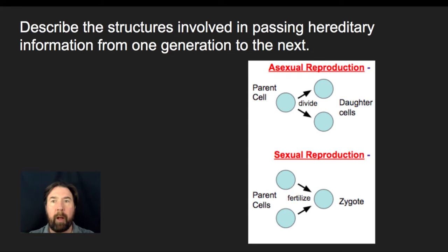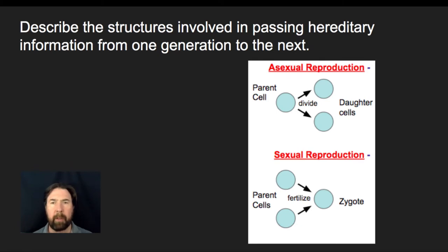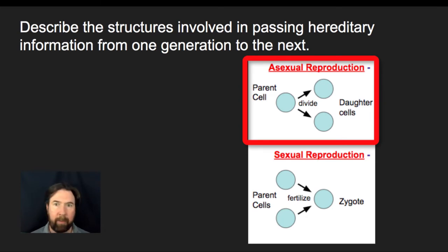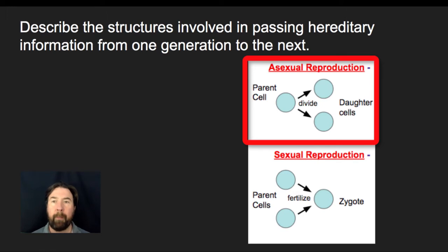First, let's describe the structures involved in passing hereditary information from one generation to the next. We're going to be talking about asexual reproduction and sexual reproduction as the two means of getting material from the parent generation to the next. In asexual reproduction, an individual has DNA in their cell, makes a copy of that DNA, then splits the cell in half, and each daughter cell gets an identical copy of the genetic information. It's very quick, involves only one parent, and has a high conservation of genetic material with very little variation generation to generation.